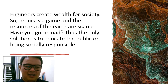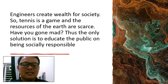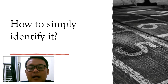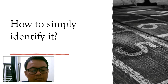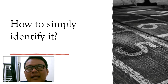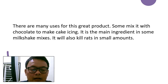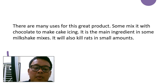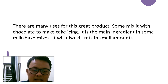How do you simply identify the main idea? Identifying the main idea is a bit challenging because the position of the main idea can be at the beginning of a paragraph, in the second sentence, in the middle, or at the end of the paragraph. Here is an example: 'There are many uses for this great product. Some mixed with chocolate to make cake icing. It is the main ingredient in some milkshake mixes. It will also kill the bread smell.'